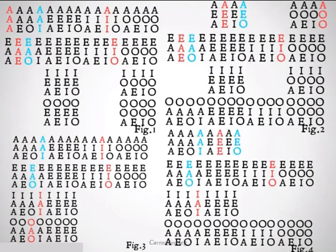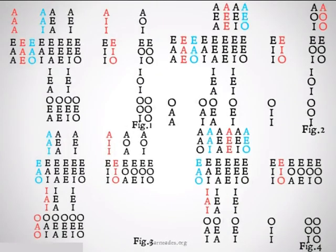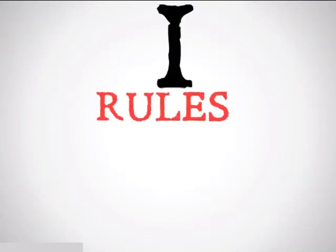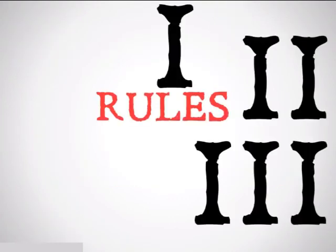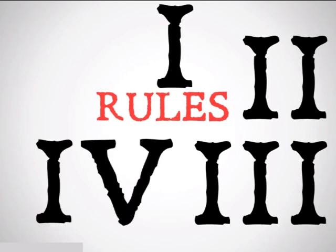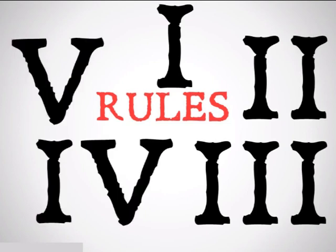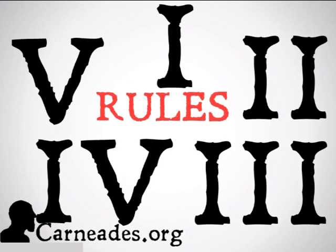That covers all of our syllogisms after rule one. After rule two, we cut it down even farther, but we still notice there are a lot of invalid syllogisms we're working with, so we're going to need some more rules. That was rule two — next up is rule three, four, and five. Watch a new video every single day for 100 days here at Carnadies.org, and stay skeptical, everybody.